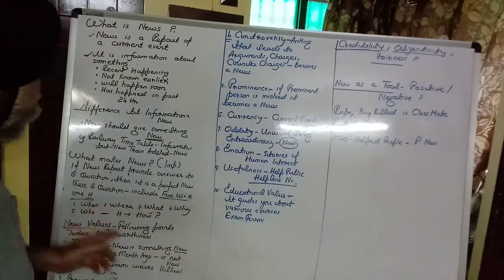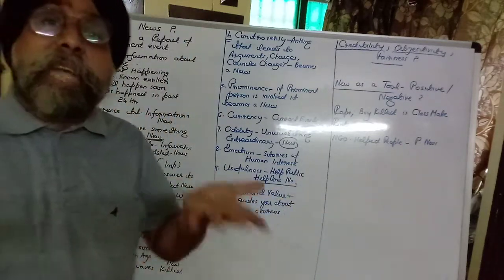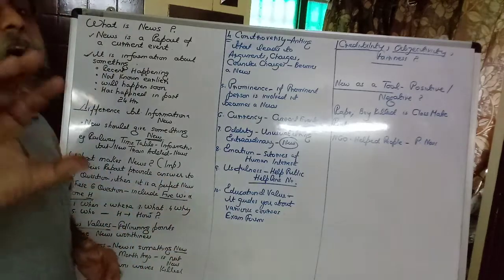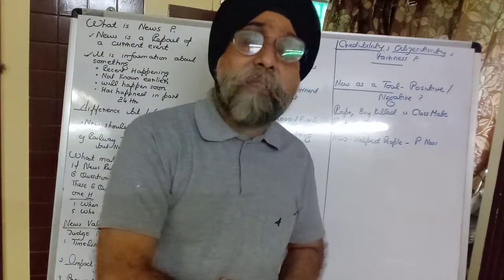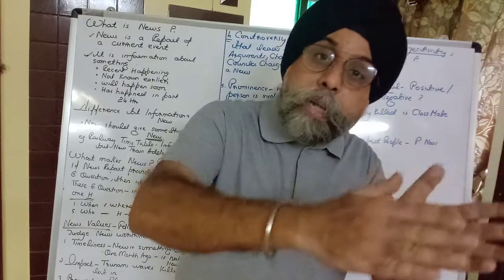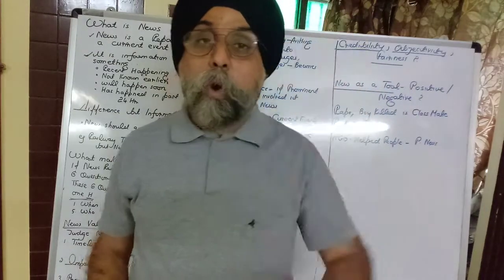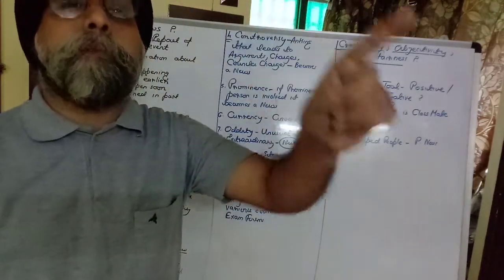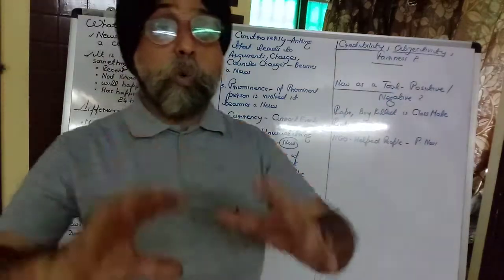For example: When did it happen? Where did the accident happen? What happened? Why did it happen? Who did it? And how did it happen? For any information to become news, the content must be new and must include the five W's and one H.